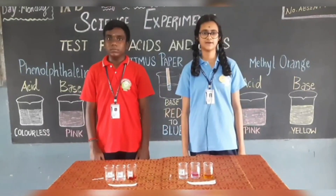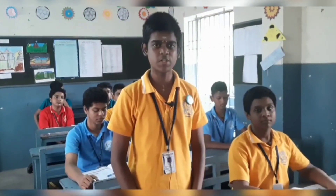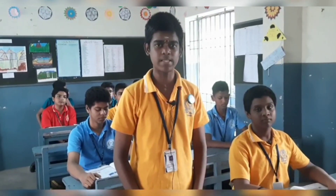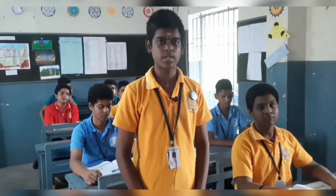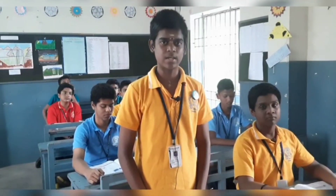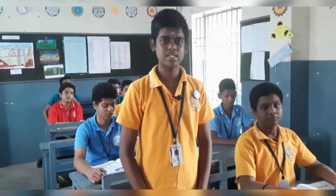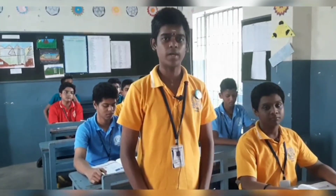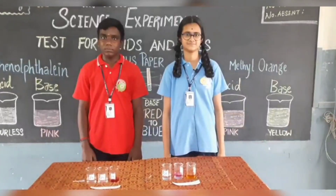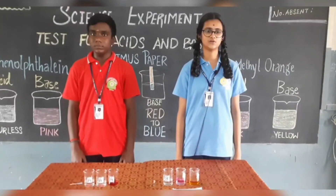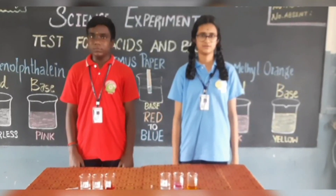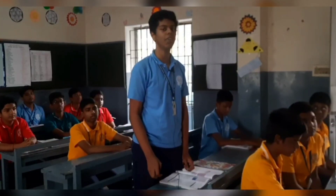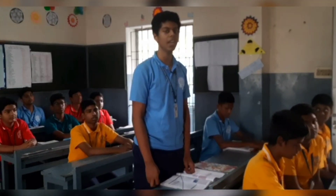Tell some uses of acids. Nitric acid is used in manufacturing of drugs, paints, and fertilizers. Carbonic acid is used in aerated drinks. Tartaric acid is a constituent of baking powder. What is the color of phenolphthalein in basic medium? In basic medium, phenolphthalein is pink in color.